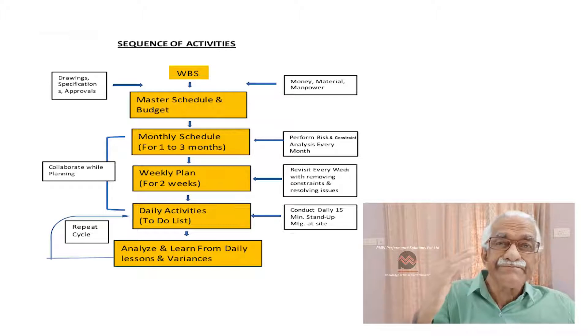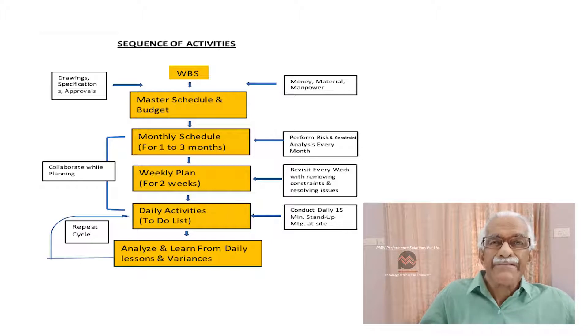Third step. Prepare a master plan. Now, the master plan has got three things: one is the WBS, the budget, and the milestone schedule. So, this is not a detailed schedule, but it's part of something we call a master plan.